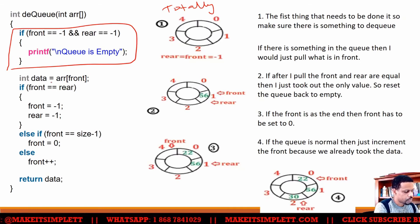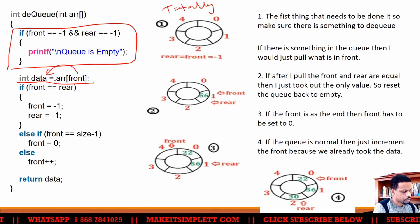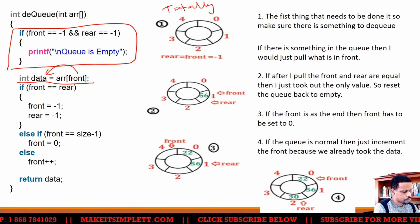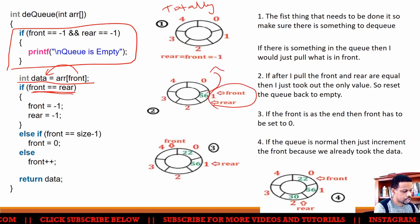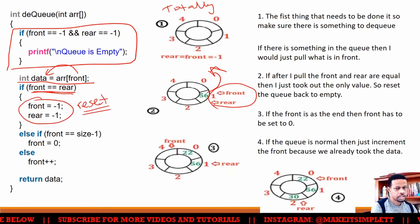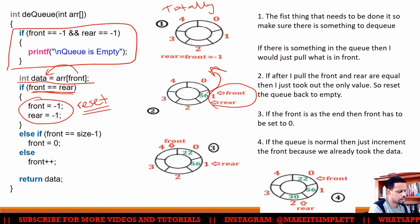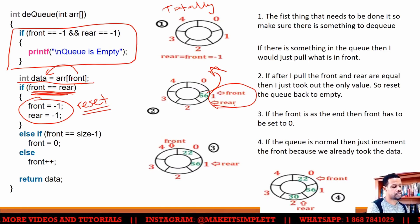Once it's not totally empty, you're going to actually take what is at the front and put it inside the data variable. But if you do a next check now, and say if the front and the rear match each other — you just took the data out — then you're going to set the front and the rear back to minus one, which is called resetting the queue. Once you have front is equal to rear, you only have one value to take out. So you're going to take out the value and reset the queue.